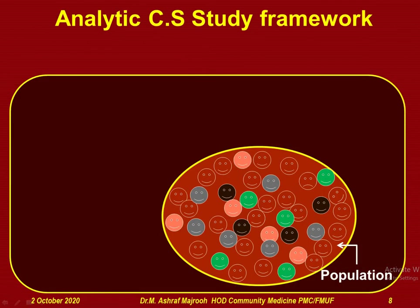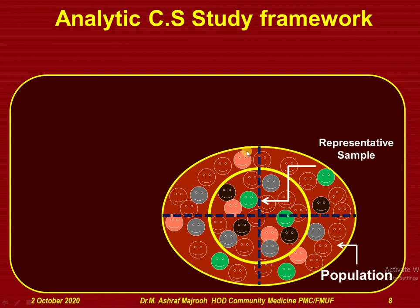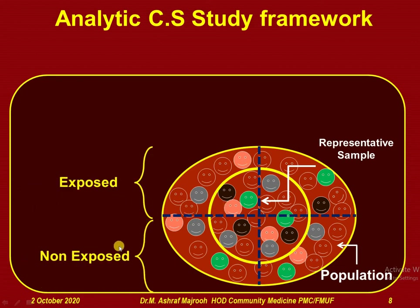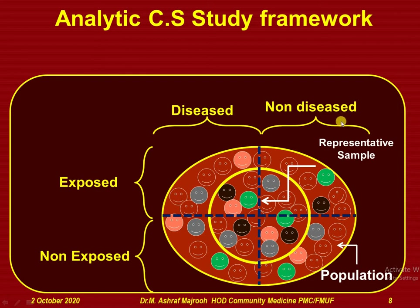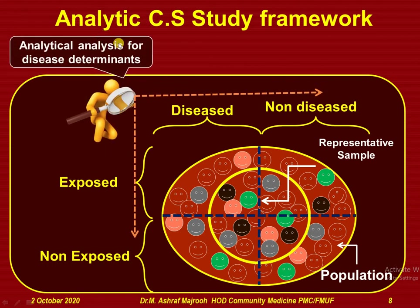In the analytic study framework, a representative sample is drawn from the study population. The sample provides natural grouping of exposed versus non-exposed, and simultaneously disease versus non-disease. These groupings provide the opportunity for analytic observations. The analysis is done for determinants like odds ratios and risk ratios to find associations between exposure and disease.